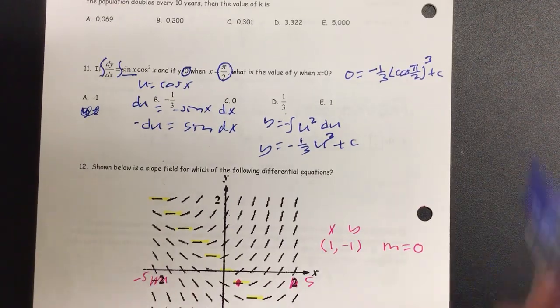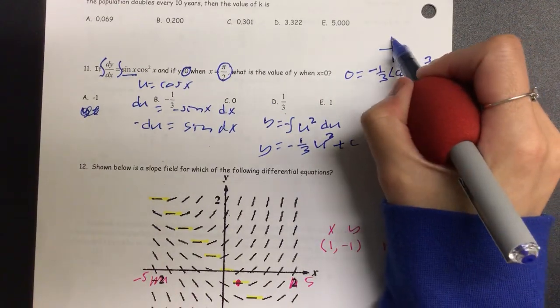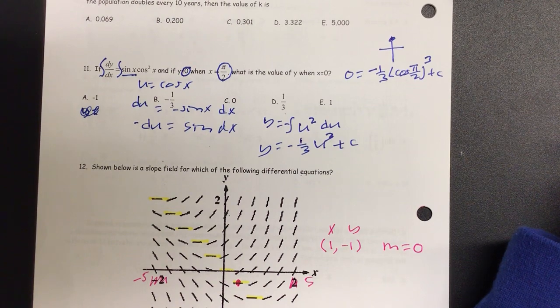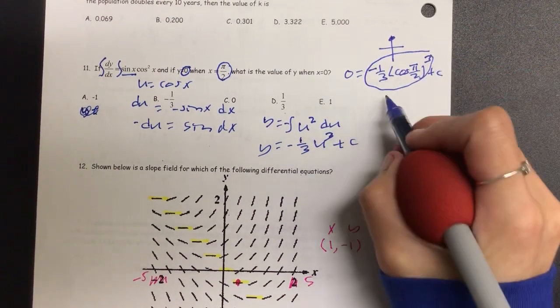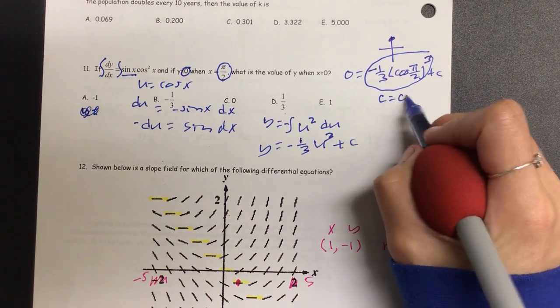Now something unique happens at pi over two. At pi over two, what is our x movement? Zero. So that all goes away, right? So if that goes away, that means really in the end, my c is zero.